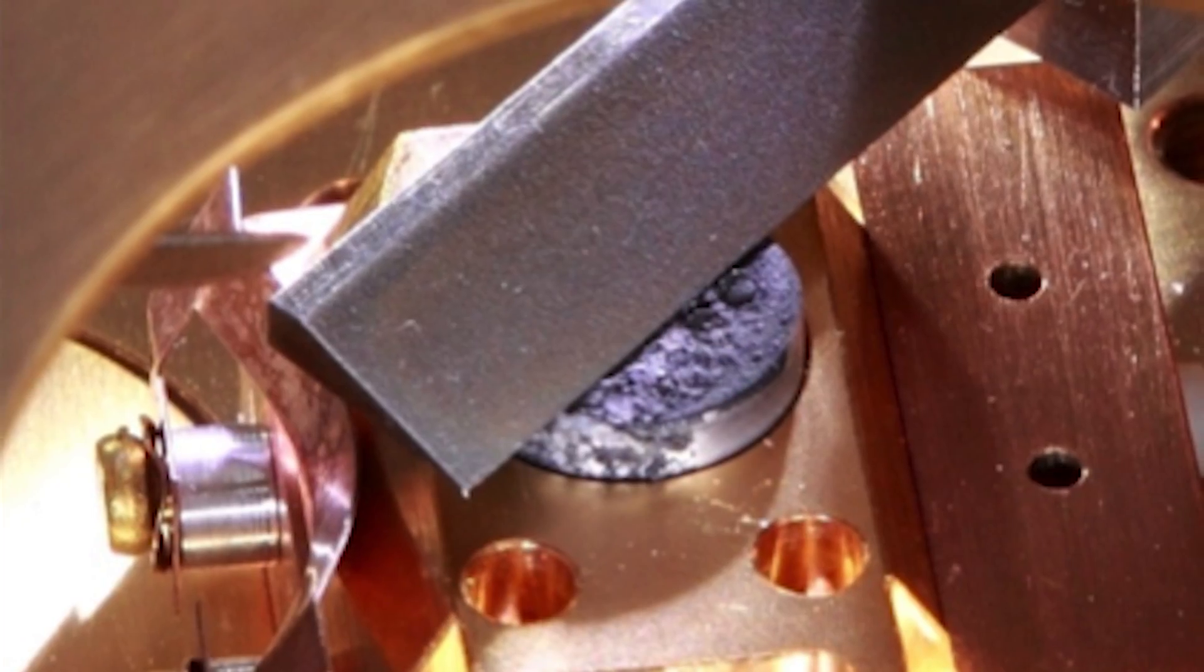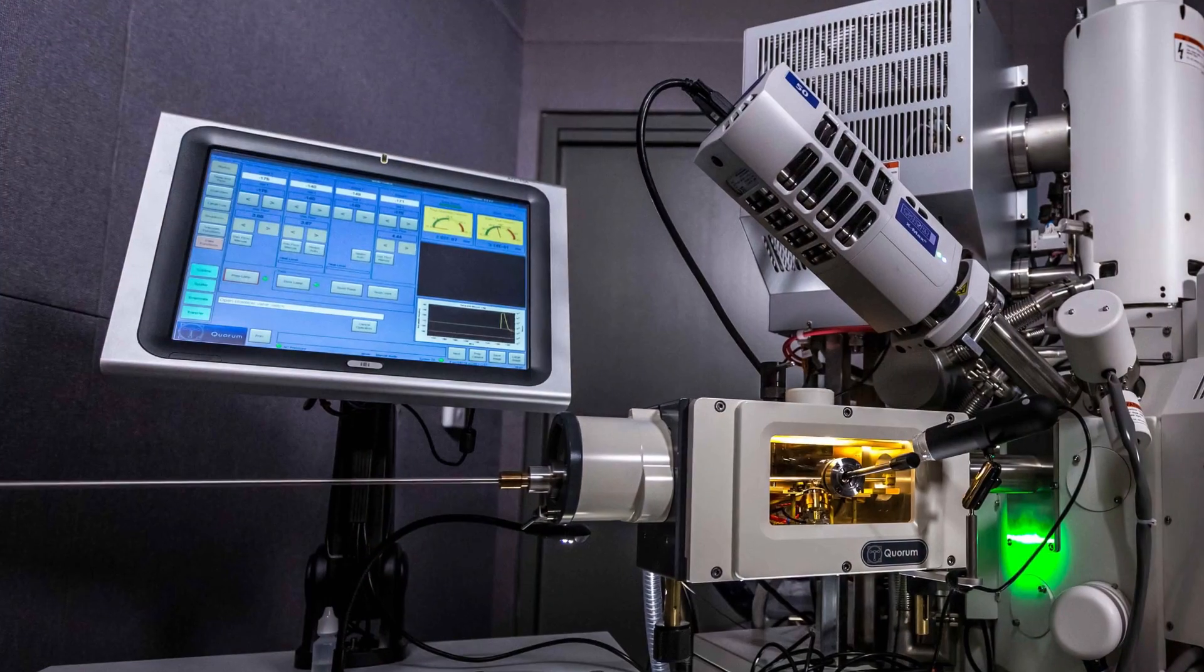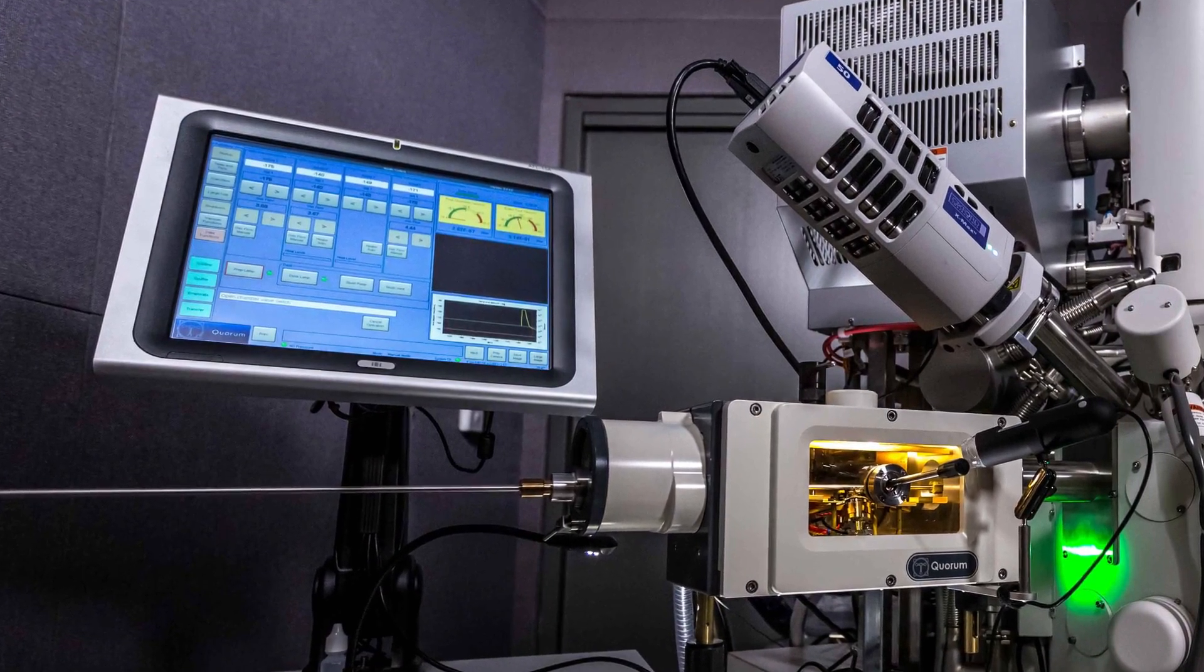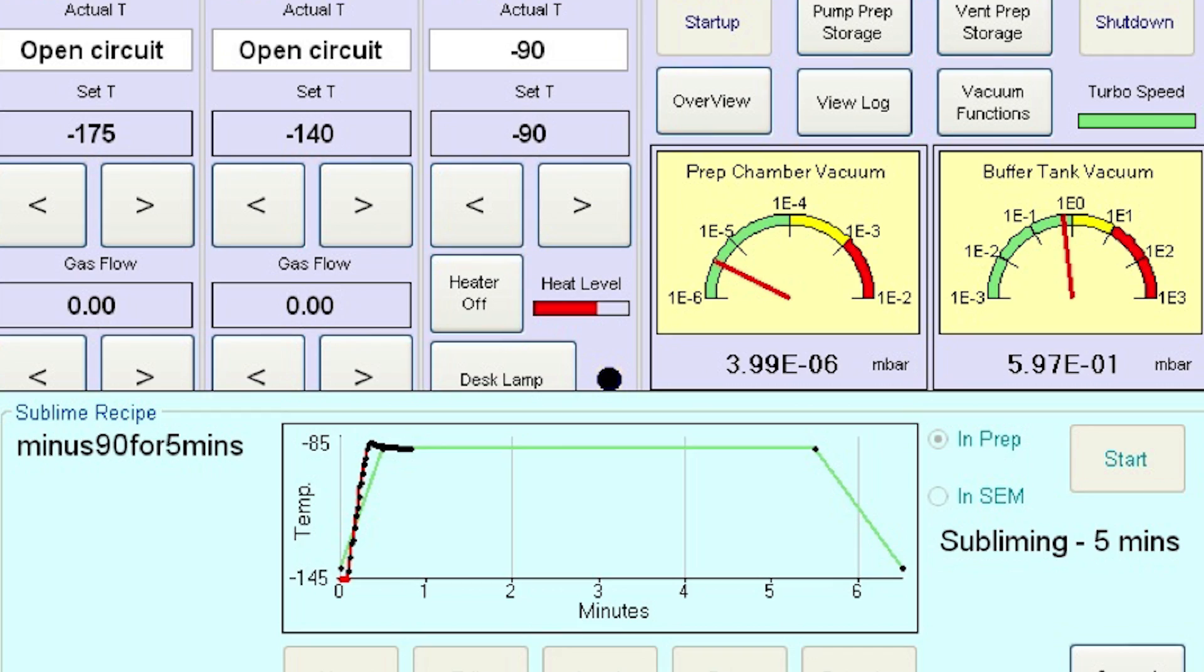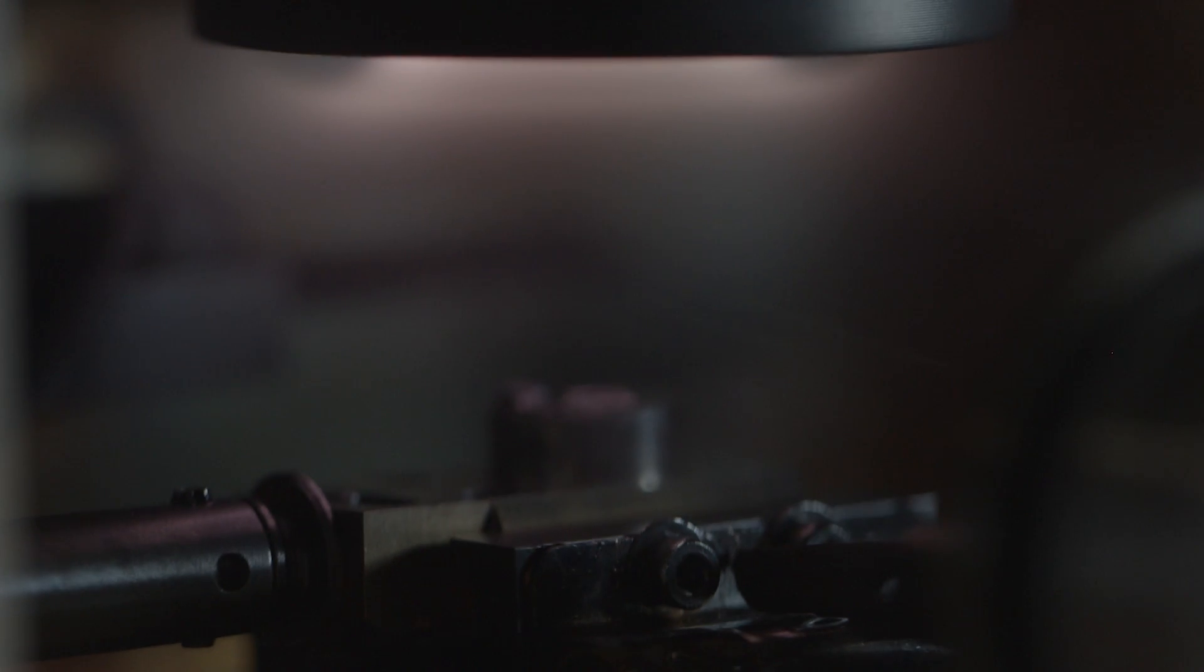Multiple preparation functions are integrated in the Quorum system such as fracturing specimens, sublimation or etching to reveal greater detail along the surface or within the sample, as well as coating with metal by sputtering or with carbon by thermal evaporation.